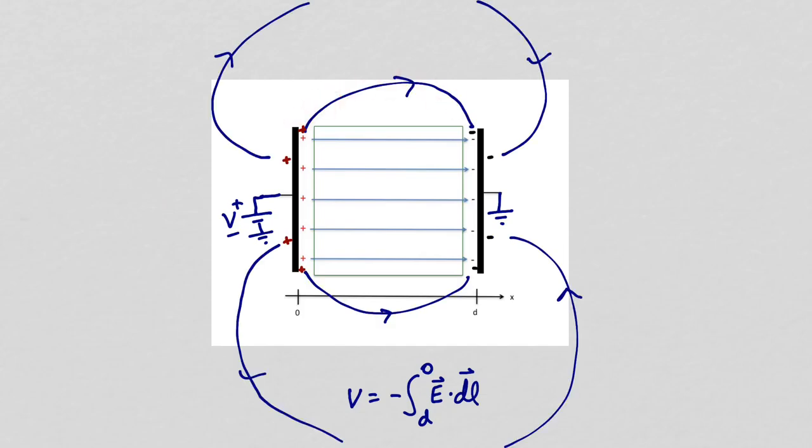We refer to these fields outside as fringing fields. We would like these fringing fields to be negligible so that we can treat the capacitor as if the only electric field lines are the horizontal electric field lines inside the capacitor.